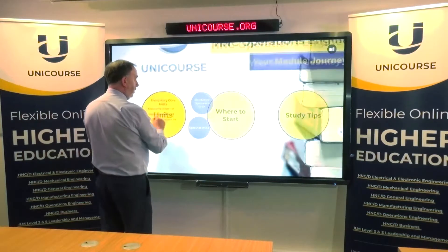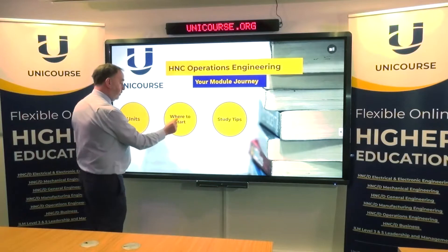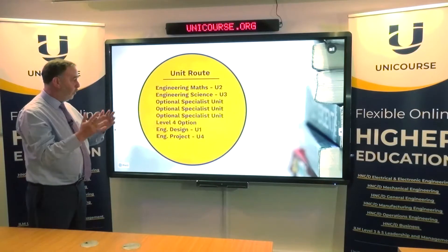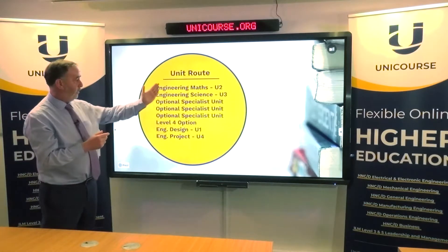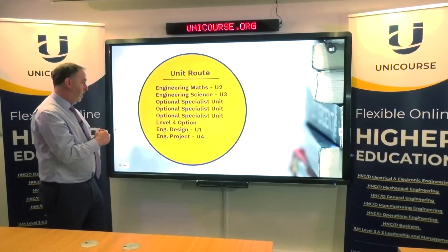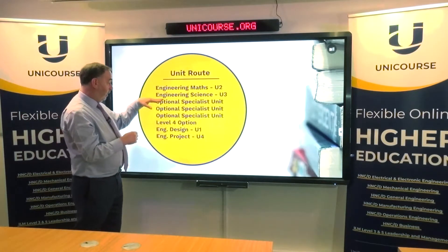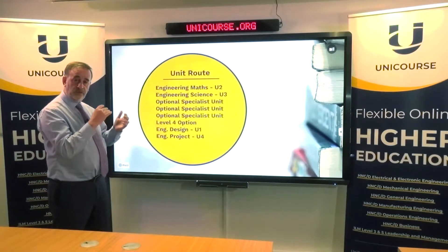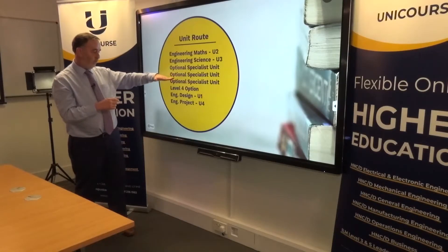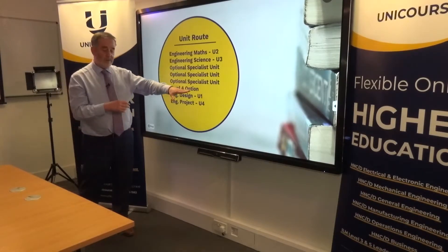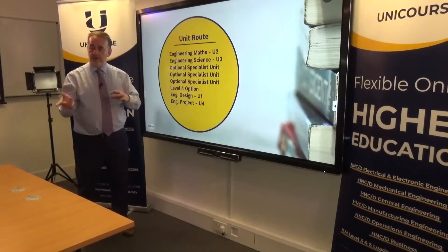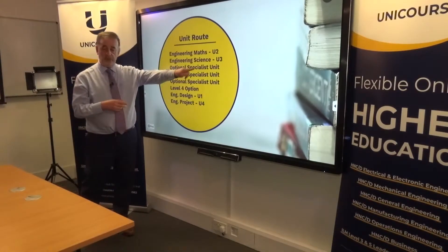Let's have a look at where you're going to start. On this particular programme, as with all the HNC Engineering programmes, we'd like you to start with Maths followed by Science. Then you're going to pick three of those specialist mandatory units and do them in sequence. Then you pick a level 4 option, which could be robotics, mechanical, fluids, or another one of those optional specialists.